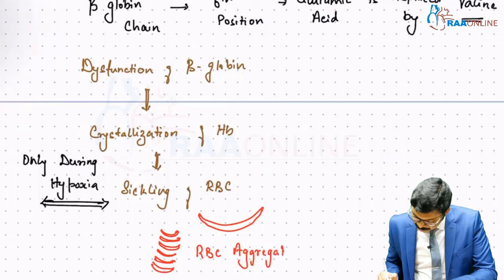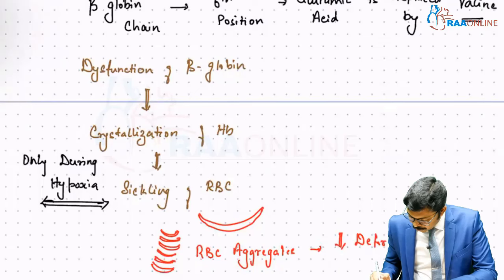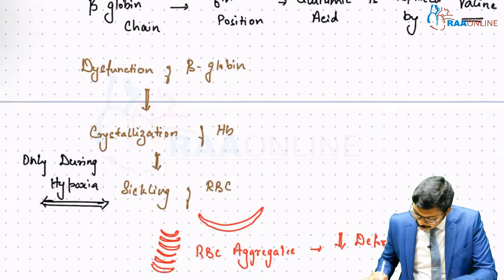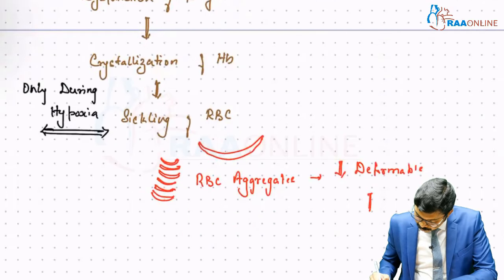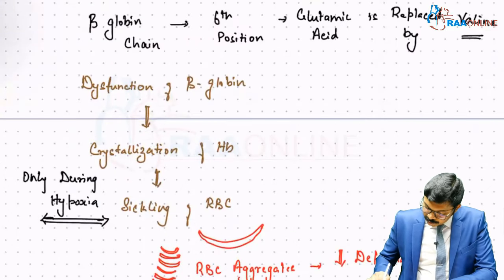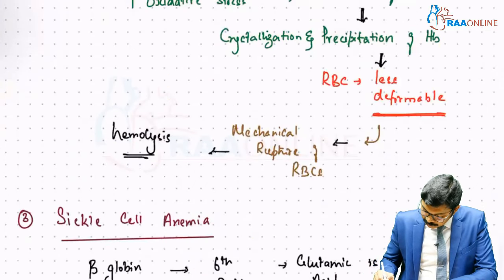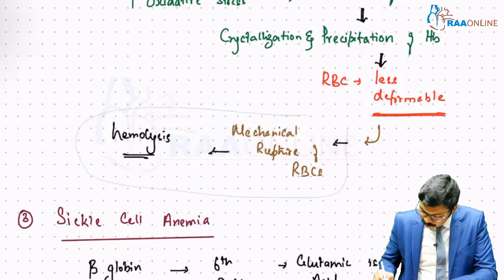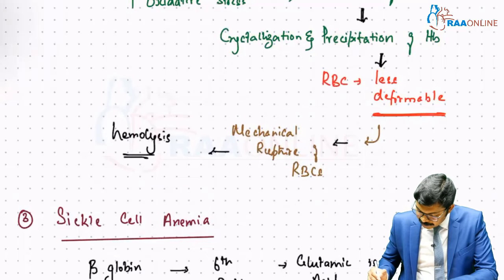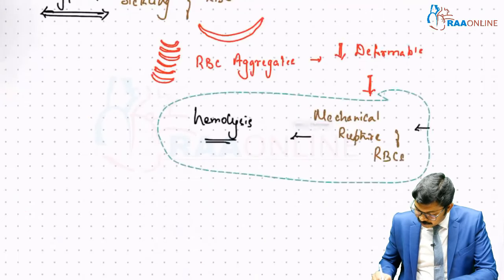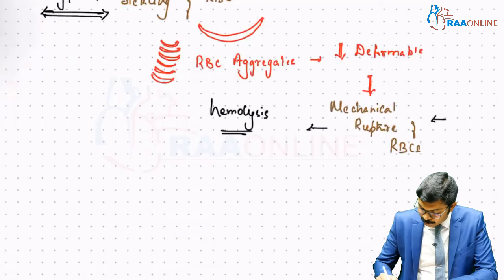And these RBC aggregates will become much less deformable. As a consequence, there is mechanical breakdown and mechanical rupture of RBCs, and this mechanical rupture of RBC ends in hemolysis.